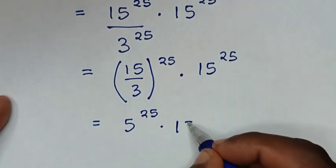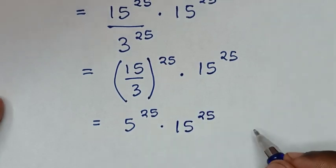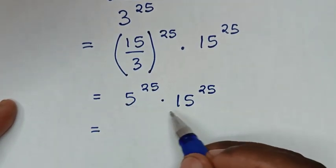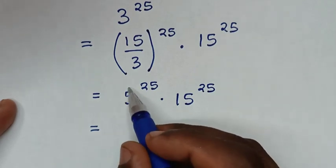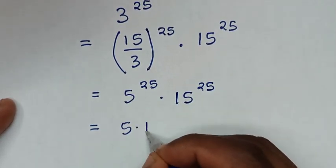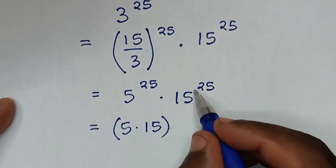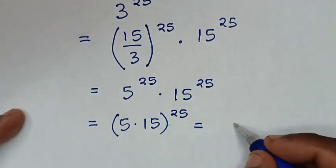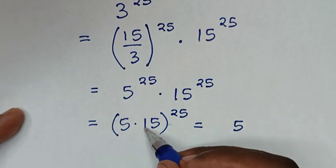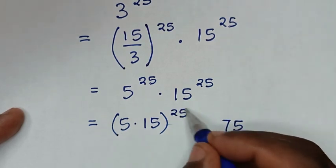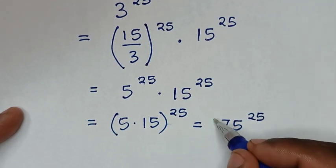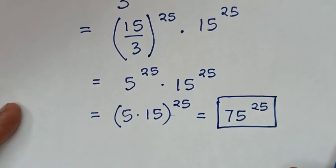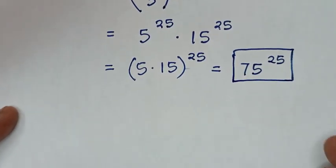Then times this exponent 15 power of 25. In the next step, as multiplication of exponents with the same power of 25, we multiply the bases: 5 times 15. So 5 times 5 is 25, and 5 times 1 is 5 plus 2 is 7 — giving us 75 power of 25 as our final answer.